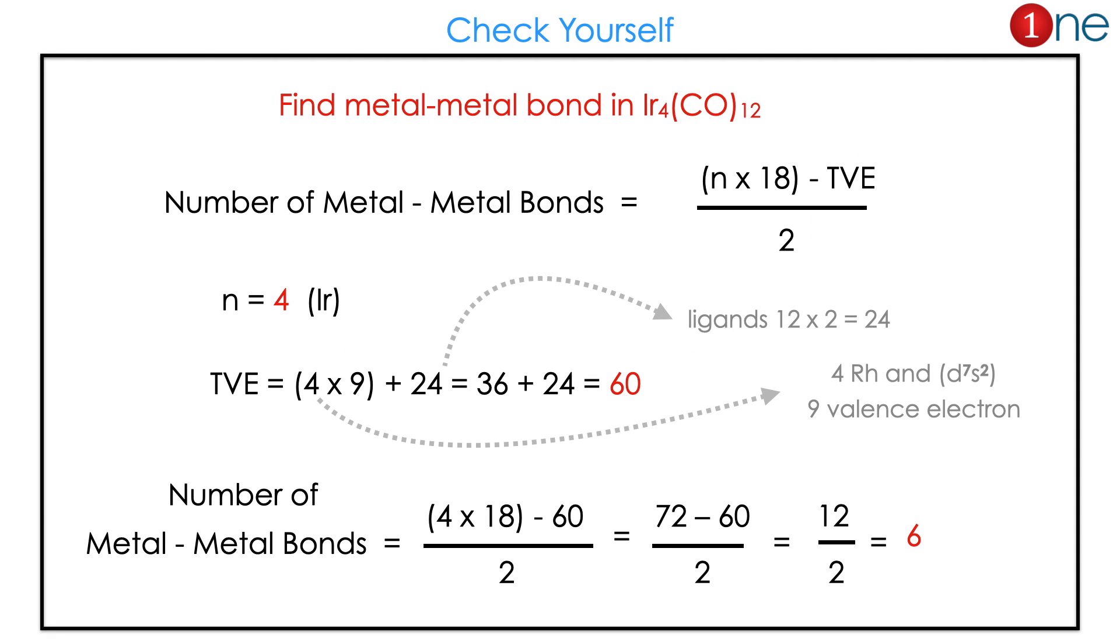Here's a problem to practice yourself. Ir4(CO)12. The central metal atom is iridium - there are 4 iridium atoms - and CO12, which is 12 carbonyl ligands. Here, n equals 4, which is the 4 iridium atoms.